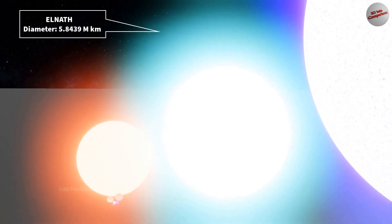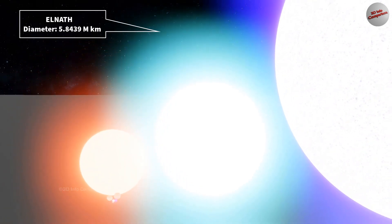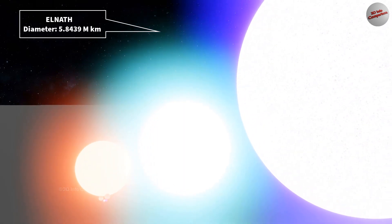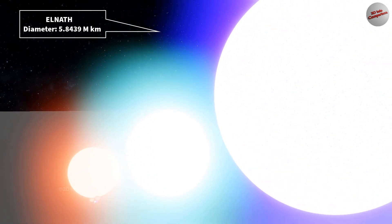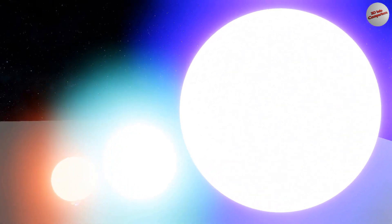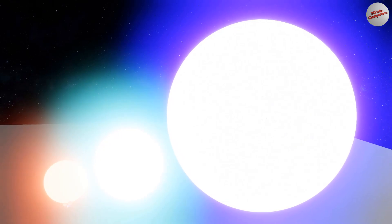Elnath, also known as Beta Tauri, is a binary star system located in the constellation Taurus. It consists of two stars, Elnath A and Elnath B. The primary star, Elnath A, has an approximate diameter of about 5.2 million kilometers.